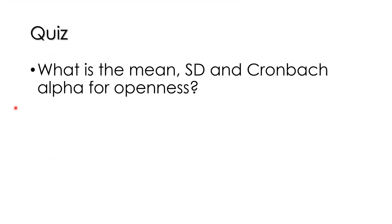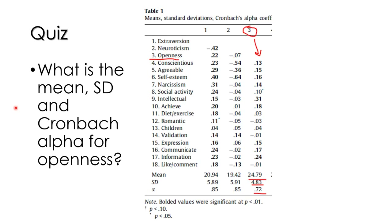Quiz: What is the mean, standard deviation, and Cronbach's alpha for openness? Stop the video and look at the table. Openness is number three, so go to column three. The mean is 24.79, standard deviation is 4.8, and the Cronbach's alpha is 0.72.